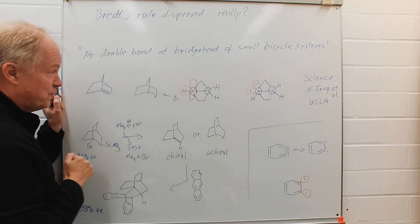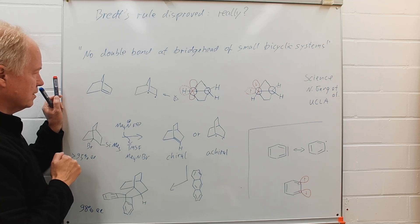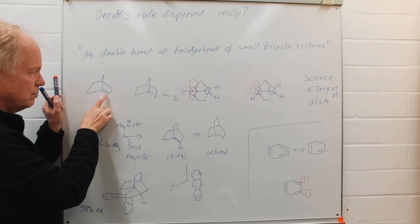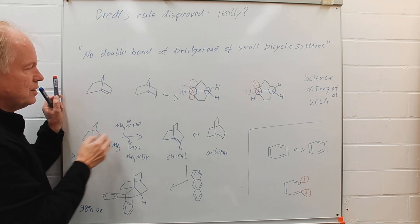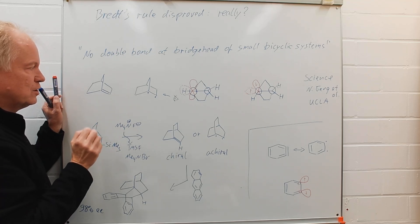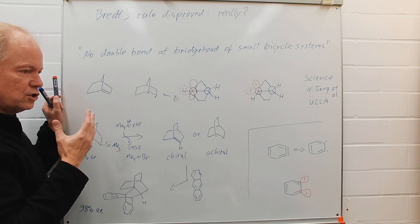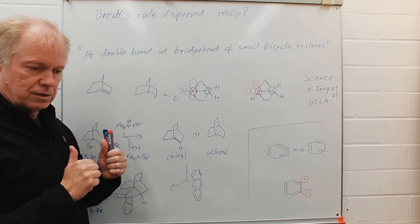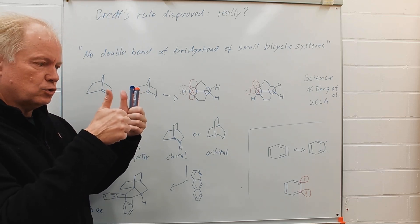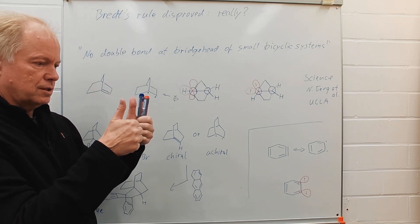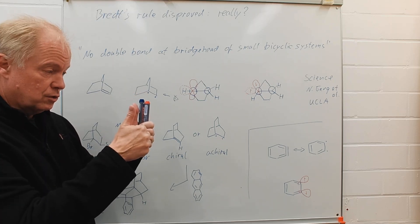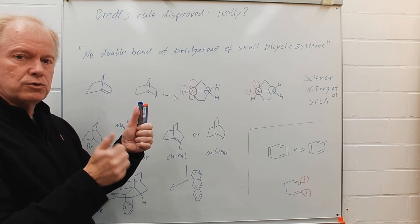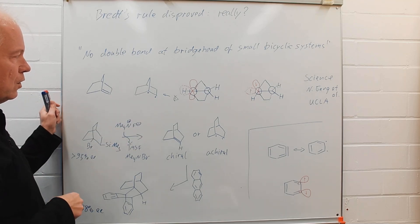Until recently before this publication came out it was not generally accepted to write down a double bond here, but it was more seen as some kind of di-radical because of the geometric constraints. We need for a classical CC double bond we need two p orbitals in close proximity to each other in line to each other so they can overlap with one electron in each orbital forming then a molecular orbital.